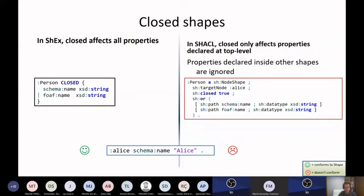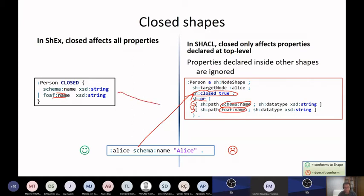Another example with closed shapes: if I have a different or extra property like a fourth name, the system should complain. In ShEx you say it is closed, and it works. But in SHACL, even if you put closed equals true, the system will not check the values of the properties. The SHACL validator would complain saying there are more properties than the listed ones, so you need to add ignored properties declarations. That's not very intuitive.